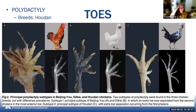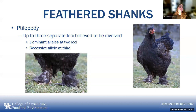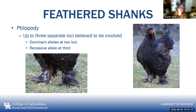Houdans also have a fifth toe, and it can originate from a different gene background than some of the others. Feathered shanks can involve up to three different genes at three different loci — dominant at two of the loci and recessive at a third — so depending on the different combinations, you get different results in the presence and amount of feathers on the shanks.